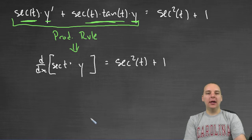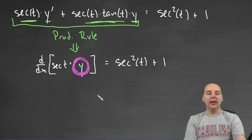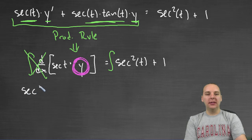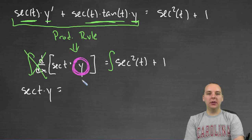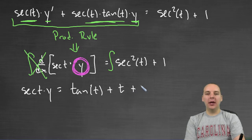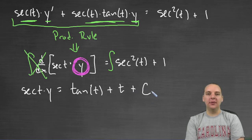We're almost done. To get y solved for, it's a two-step process. Step one: integrate both sides. Integrating gets rid of the derivative on the left, giving secant(t)·y equals the integral of secant squared — which is tan(t) — plus the integral of one, which is t, plus a constant of integration C.